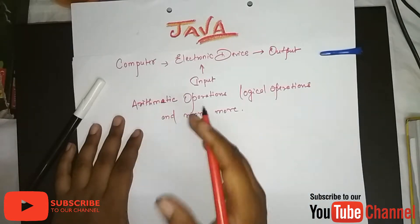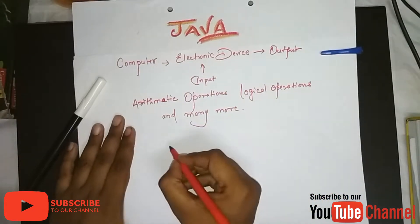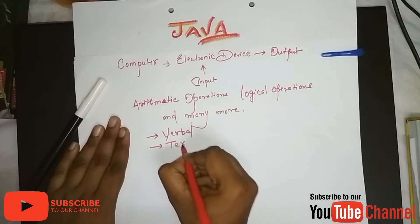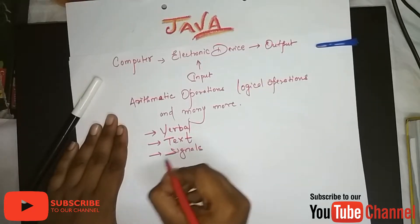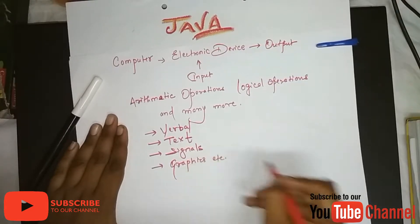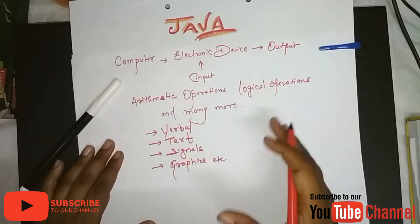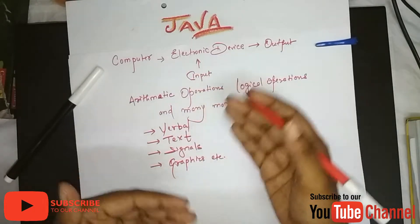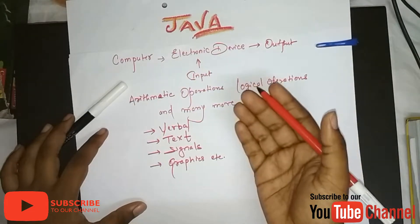There has to be a medium with which you can communicate with the computer. That medium can be anything — verbal, text, signals, graphics, etc. Programming language is also such a medium with which we communicate with the computer. It is a kind of communication medium through which we convey what we need to provide to the computer.